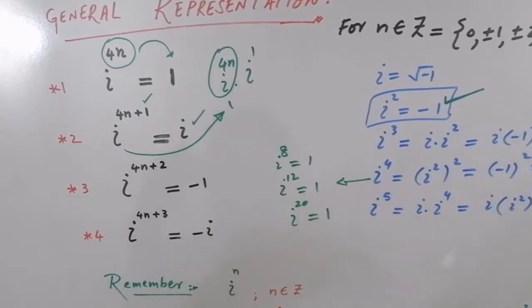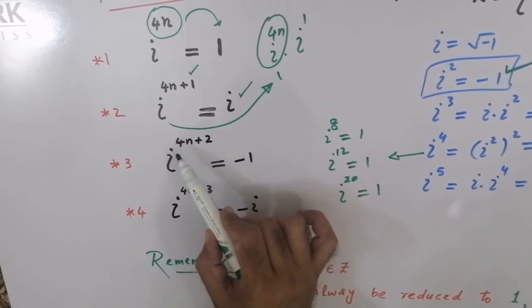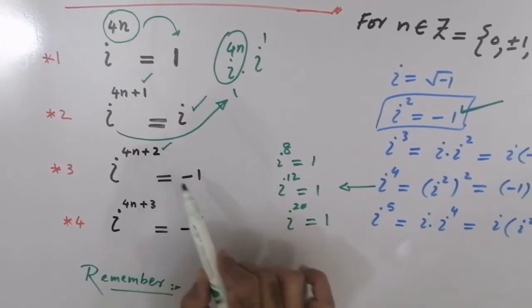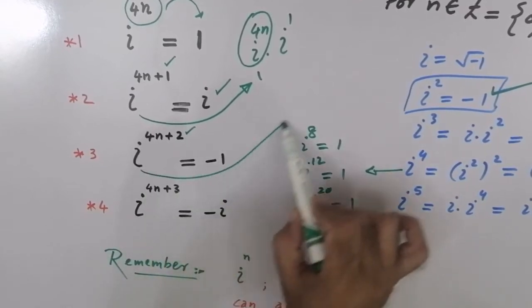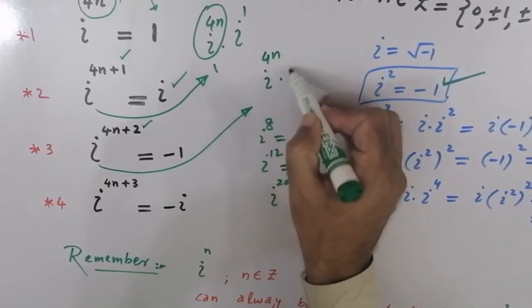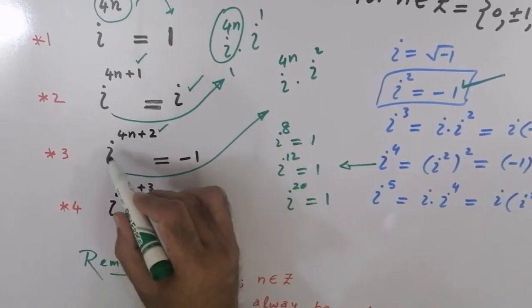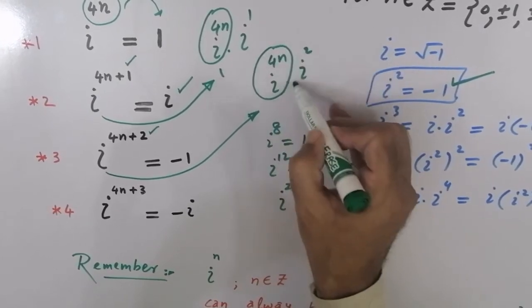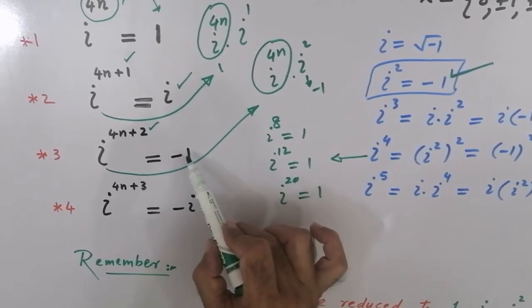تو اس کا answer ہے IOTA. Similarly، اگر ہمارے پاس IOTA raised to power 4n plus 2 ہو، اور IOTA کا power 4 سے divide کریں اور 2 رہ جائے، تو last answer ہوگا minus 1۔ کیونکہ IOTA raised to power 4n into IOTA² رہ جاتا ہے، اور IOTA² کی value minus 1 ہے — that's why the answer will be minus 1.